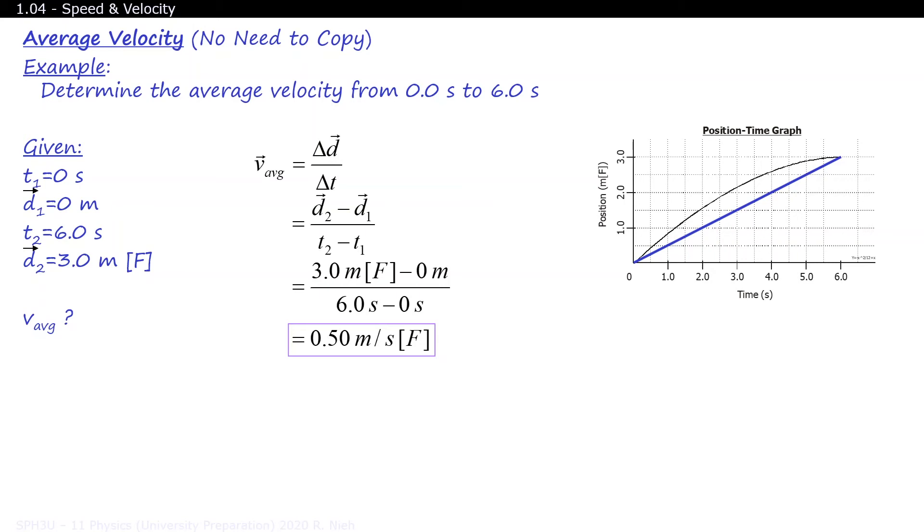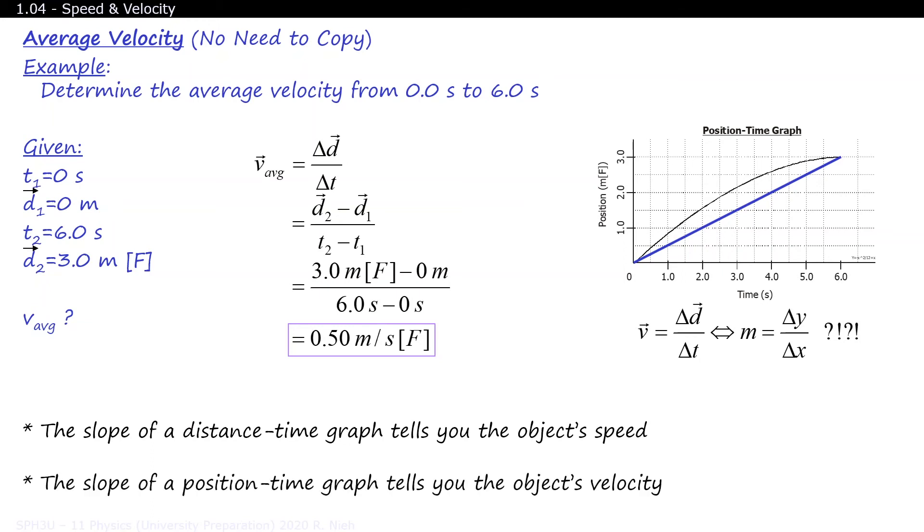By the way, did you notice a resemblance of this formula with another formula that you've seen in the past? Doesn't it look a little bit like the slope equation? Well, in fact, it is. But this time around, there's meaning to the slope. The slope of a distance-time graph tells you the object's speed. And the slope of a position-time graph tells you the object's velocity.